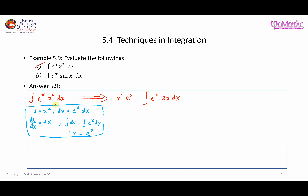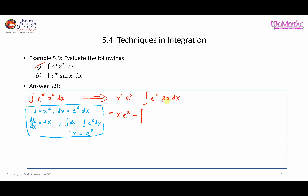We have not yet solved the problem, so we need to apply integration by parts one more time in order to solve this remaining integral. For the second application, u is equal to 2x, so du/dx is equal to 2, and therefore du is equal to 2 dx.